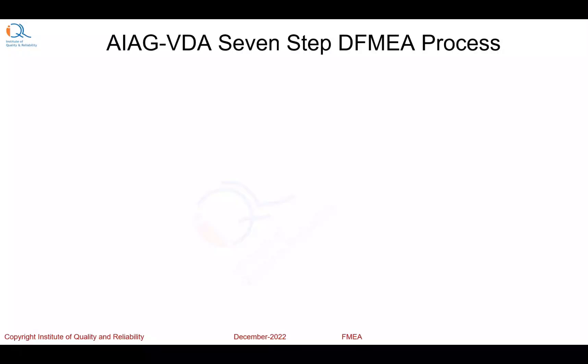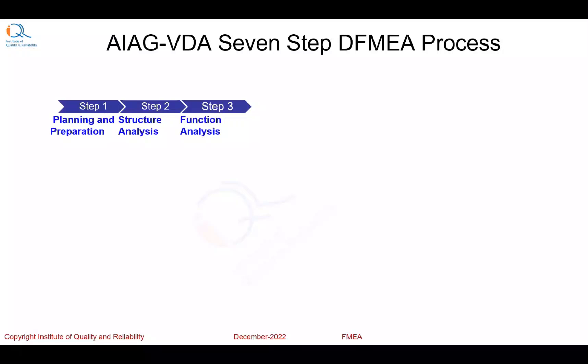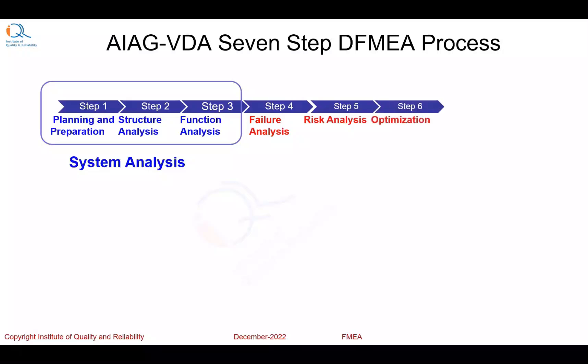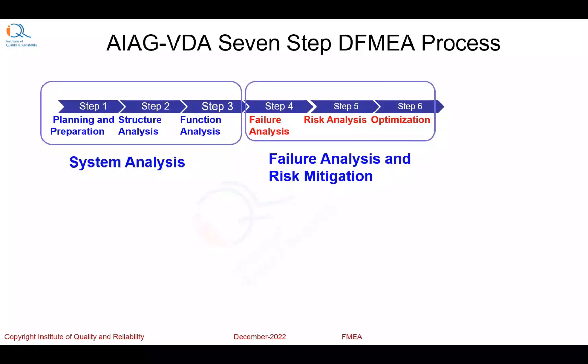FMEA procedure has been standardized by the Automotive Industry Action Group, or AIAG. The current version of the standard is released by AIAG VDA. Here is the seven-step DFMEA process recommended by this standard: Step 1 is planning and preparation, followed by structure analysis, then function analysis — these first three steps are called system analysis. Then failure analysis, then risk analysis, then optimization — this is failure analysis and risk mitigation. And finally, risk communication and action plans.